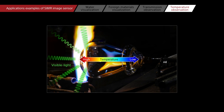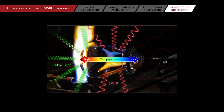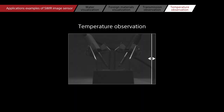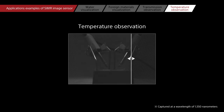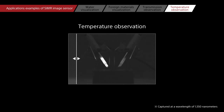Image sensors capture an object's thermal radiation as brightness. Visible light images can be taken from around 700 degrees Celsius and above, while SWIR images can be taken from around 250 degrees.